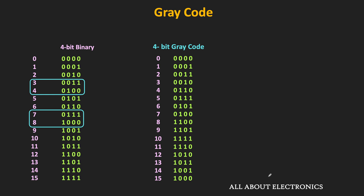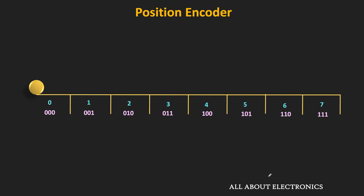On the other hand, since the gray code is a unit distance code, when we move from one code to the next, only one bit changes at a time. This is particularly useful in position encoders, which are used to track the linear or angular position of objects. For example, in a linear position encoder, the entire position range is divided into 8 zones, and each zone is binary coded using 3 bits.